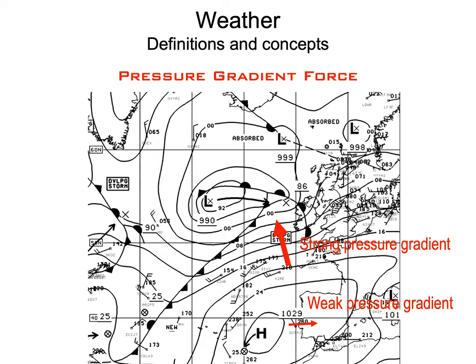Looking at a pressure gradient map with isobars, we can quickly visualize areas of low and high pressure. The pressure gradient force is proportional to the pressure gradient — the word gradient means change with distance. Where isobars are close together, pressure is changing quickly with distance, meaning a strong pressure gradient. Where isobars are farther apart, the pressure gradient is weaker. So the difference between close and spread-out isobars tells you the strength of the pressure gradient.